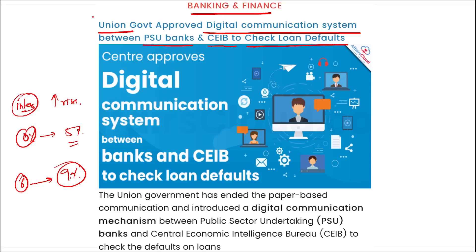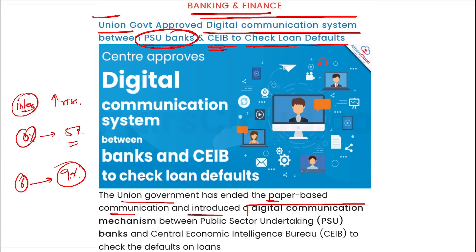People who took home loans, business loans, or personal loans are now seeing increased EMIs. The union government approved a digital communication system between PSU banks and the Central Economic Intelligence Bureau (CEIB) to check loan defaults. The union government ended the paper-based communication and introduced a digital communication mechanism.